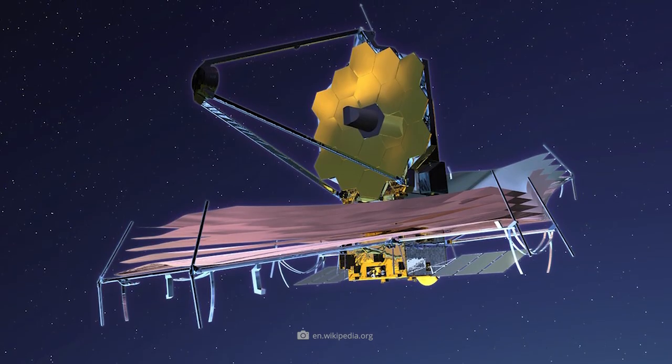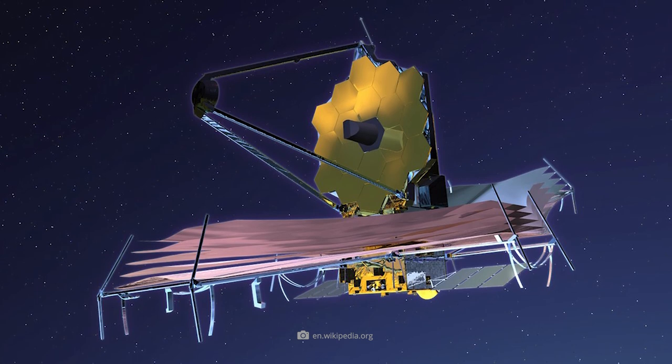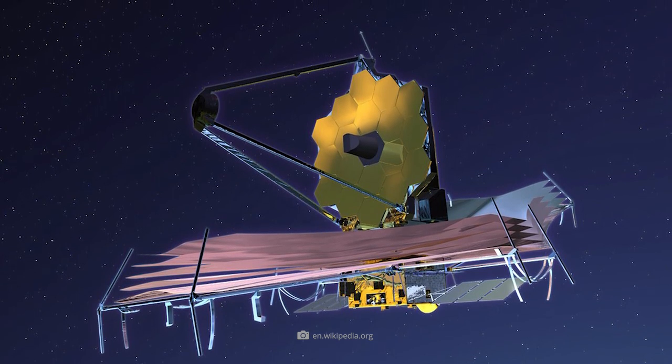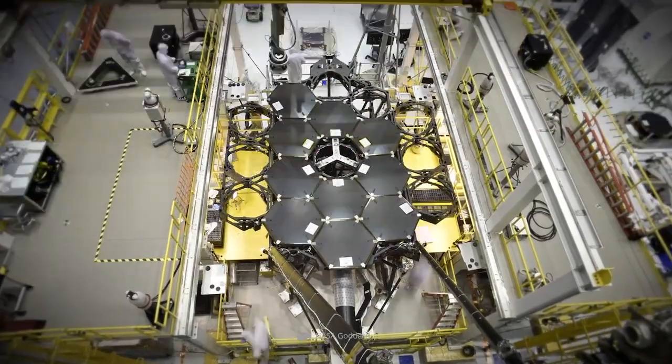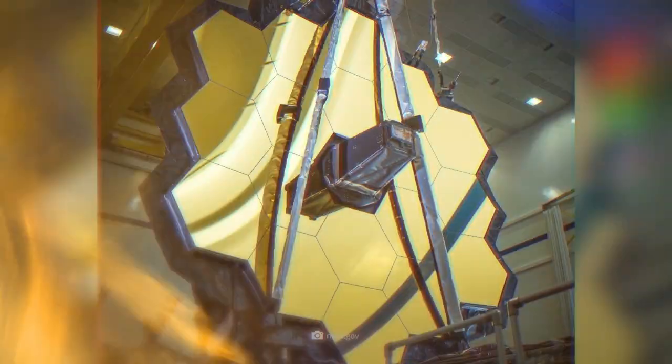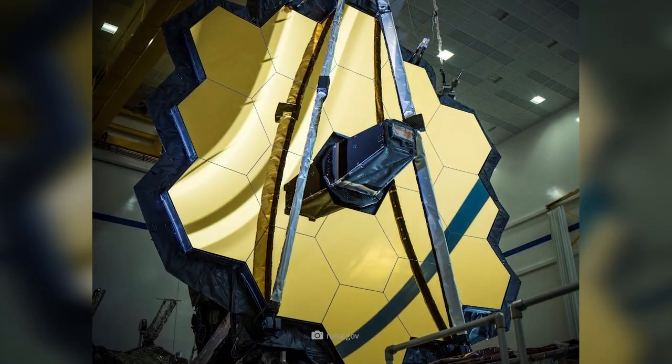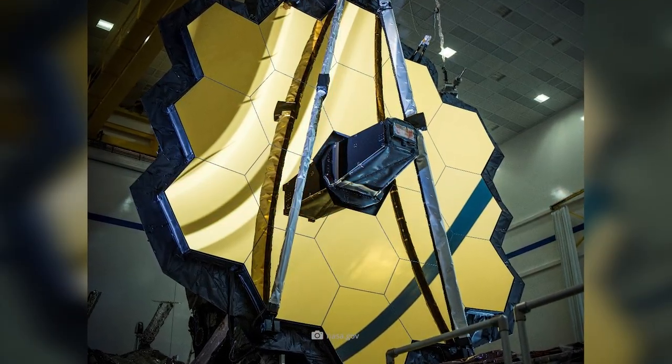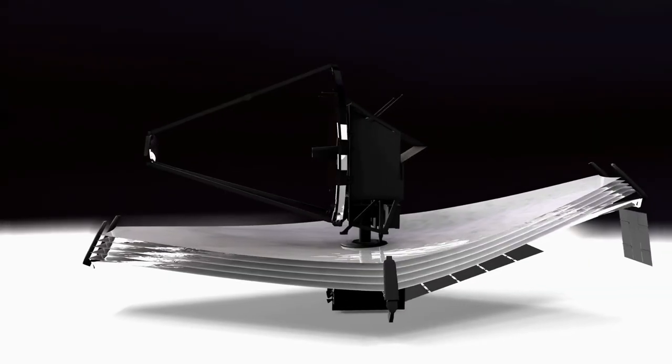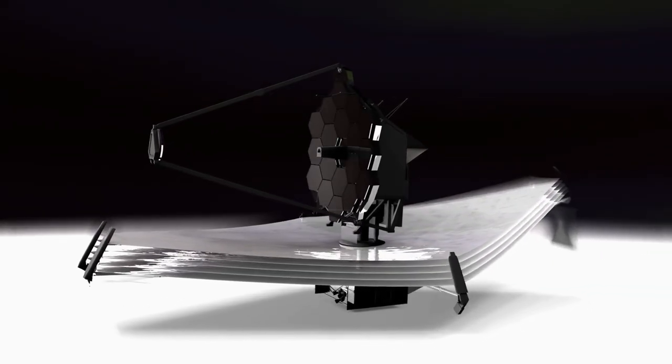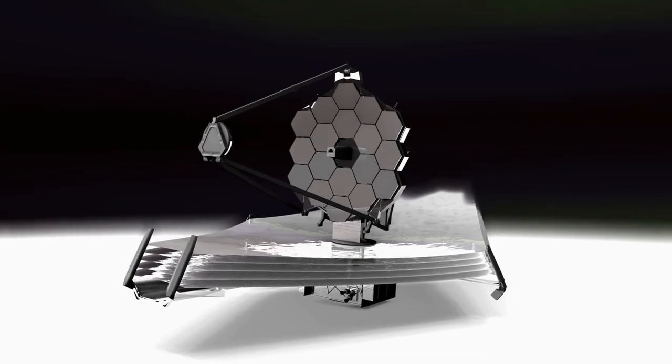One thing is certain, James Webb looks deeper into the universe than any other telescope to date. Thanks to a 21-foot mirror with 18 honeycomb-shaped segments, James Webb can capture light that has been traveling to us for more than 13 billion years. The 69 by 46-foot telescope is packed with high-tech, state-of-the-art instrumentation.